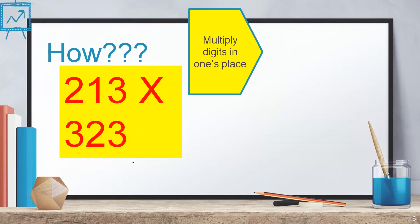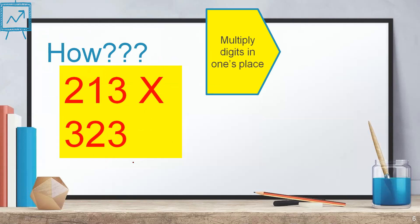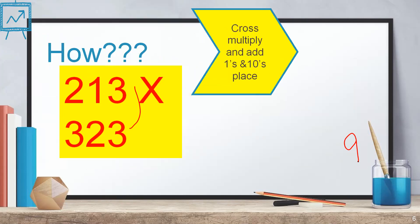That is in the first step. What is the first step? Multiply digits in the 1s place. In the 1s place here, I have 3 and 3. When you multiply these two, I can write the answer as 9. Right? Next step is what? Cross-multiply and add 1s and 10s place. That is 3 times 1 and 3 times 2. 3 times 1 is 3. 3 times 2 is 6. 6 plus 3 is 9.